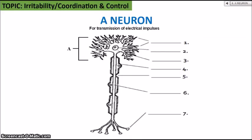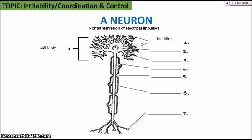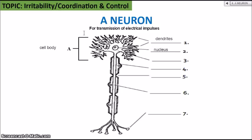Staying on the topic of irritability and coordination and control, we're going to look at the functional units of the nervous system — the neurons. These are specialized nerve cells responsible for transmitting electrical impulses throughout the nervous system. This particular neuron is a motor neuron. One is the dendrites — small fibers that connect to other neurons and receive electrical impulses. Two is the nucleus — all cells will have a nucleus with the exception of red blood cells. Three is the cytoplasm. These are the basic parts of the cell body.